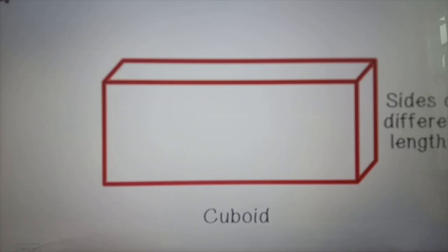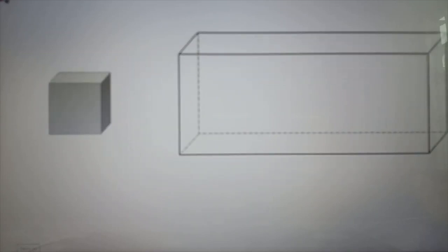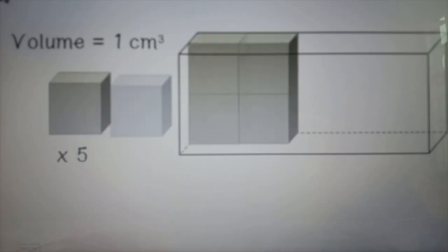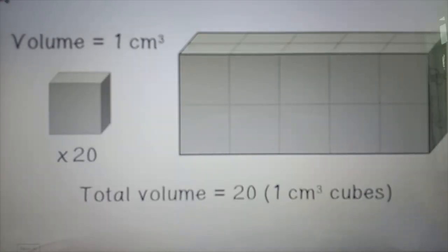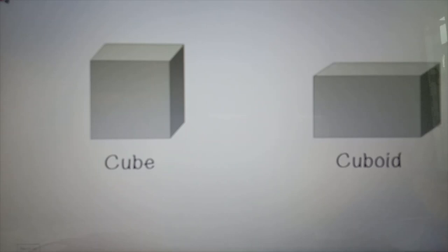To measure the volume of a cuboid, which is a box with sides of different lengths, we can use a cube with a volume of 1 cubic centimeter. Count the number of 1 cubic centimeter cubes that can fill the cuboid. The total number of cubes is 20, so the volume is 20 cubic centimeters.